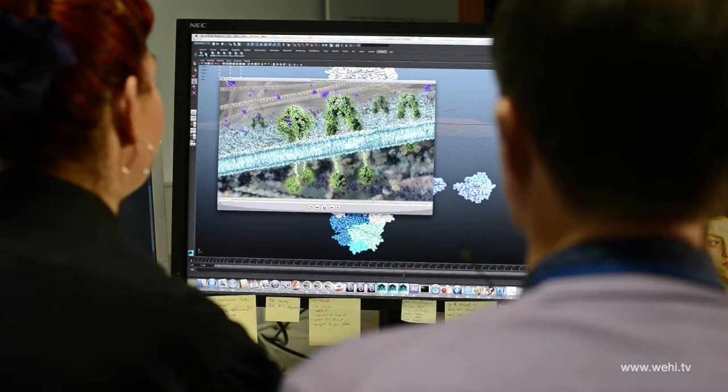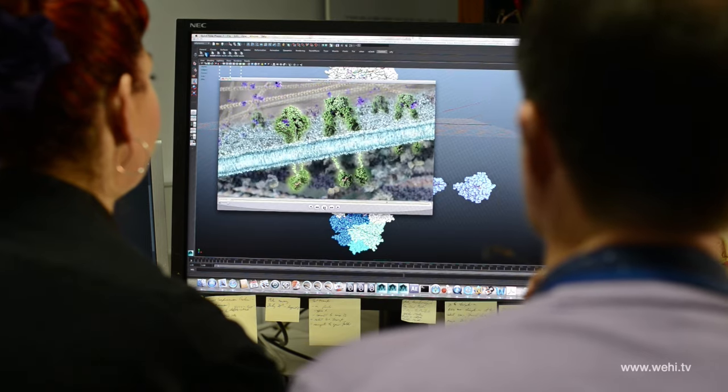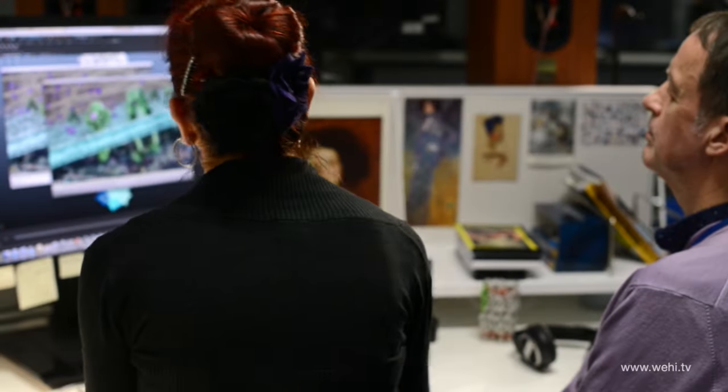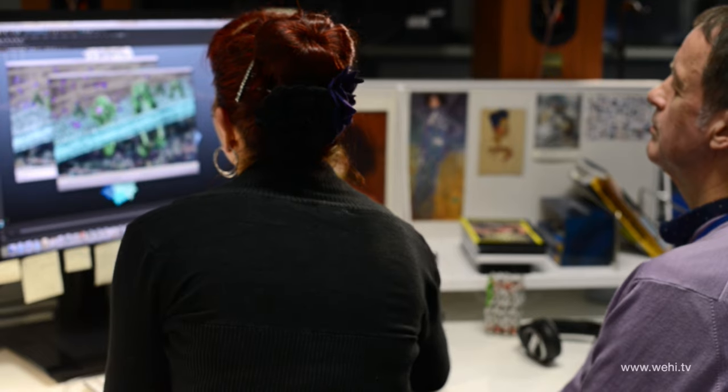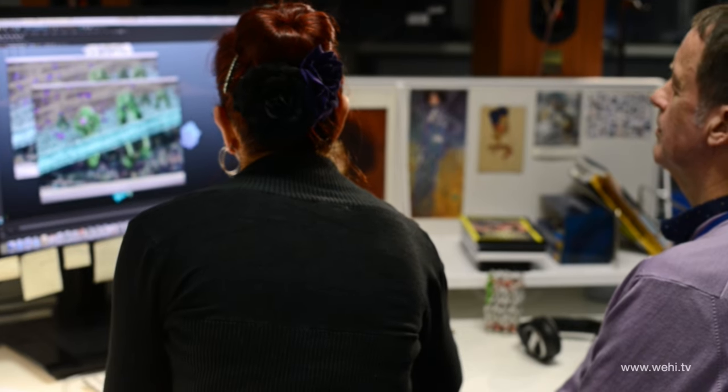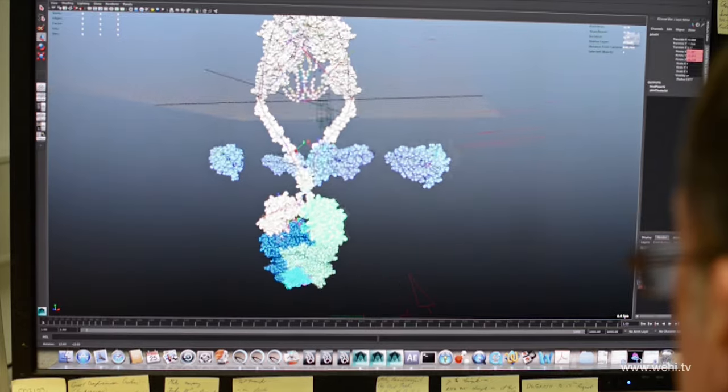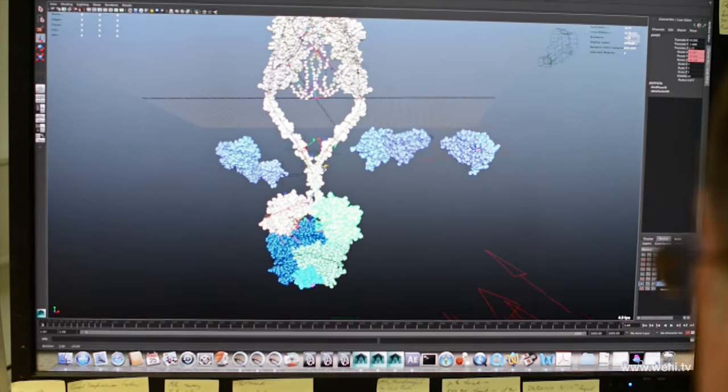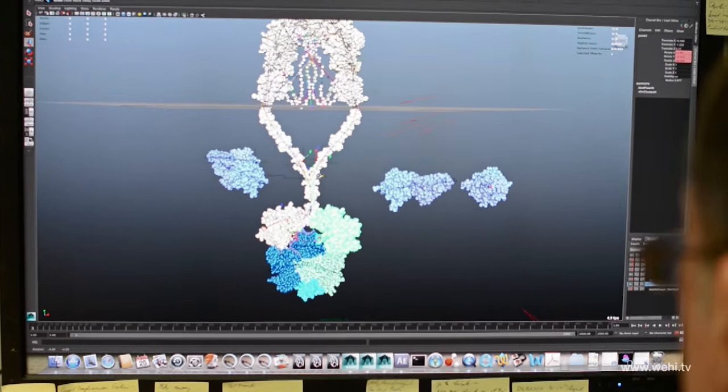Insulin has been used to treat diabetes for a very long time. But all of those formulations and types of insulin have been designed and formulated without any knowledge of the way in which insulin actually interacts with its receptor. And now for the first time we've got a picture of that and we can use that into the design of new insulins that could be used for the treatment of diabetes.